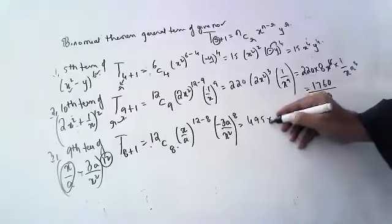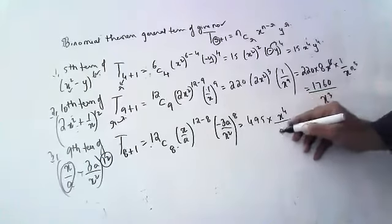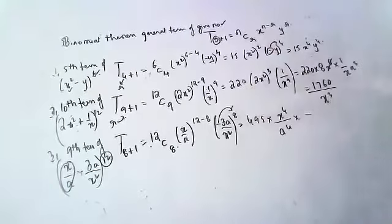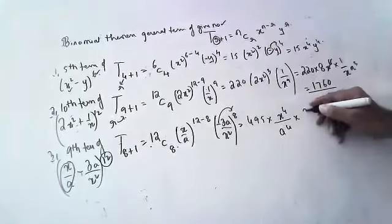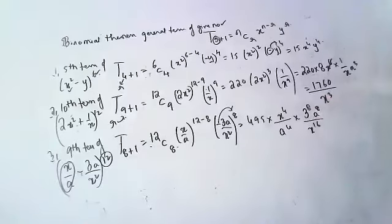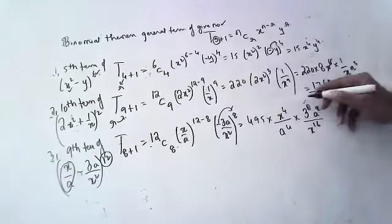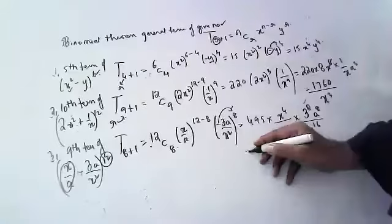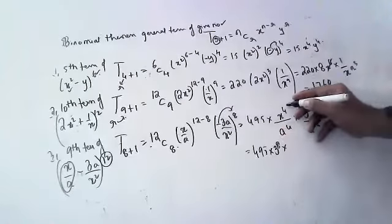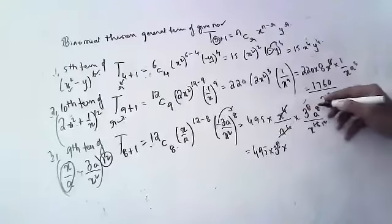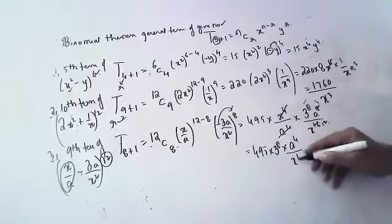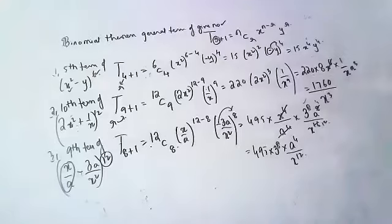So we have 495 · (x/a)⁴ · (-3a/x²)⁸. The minus becomes plus because it's an even power. That gives 495 · 3⁸ · a⁸ / x¹⁶ · x⁴ / a⁴. Simplifying the x and a terms: x terms cancel leaving x^(4-16), and a terms give a^(8-4), so the final answer is 495 · 3⁸ · a⁴ / x¹².